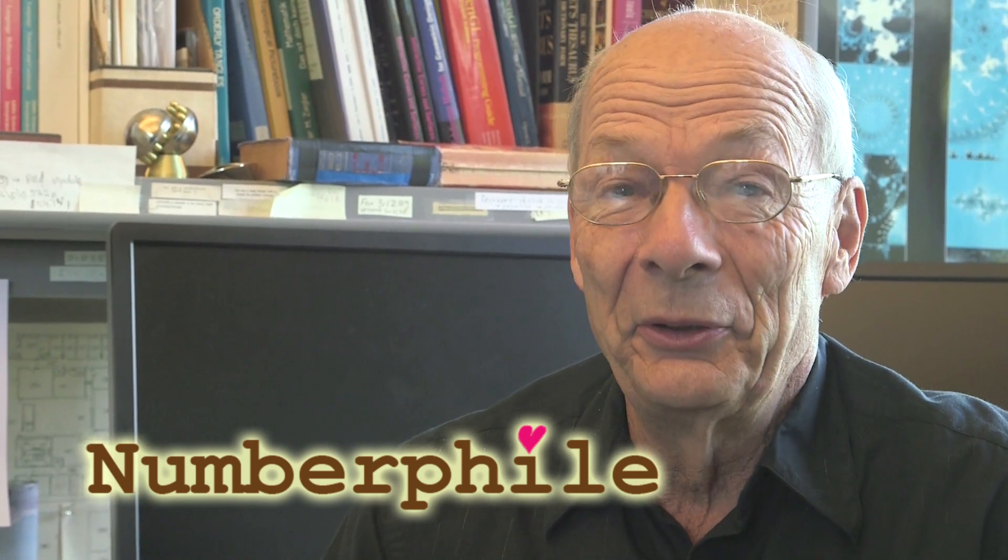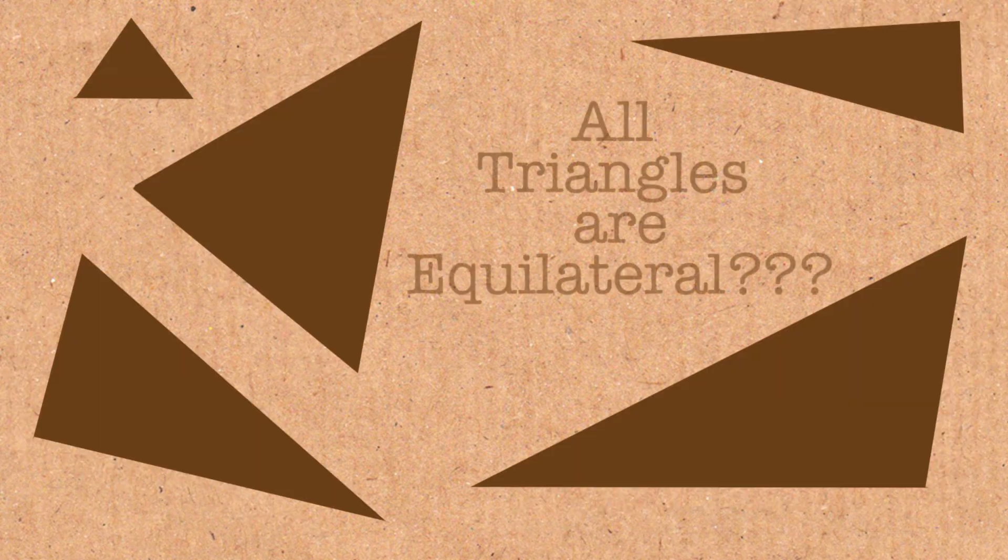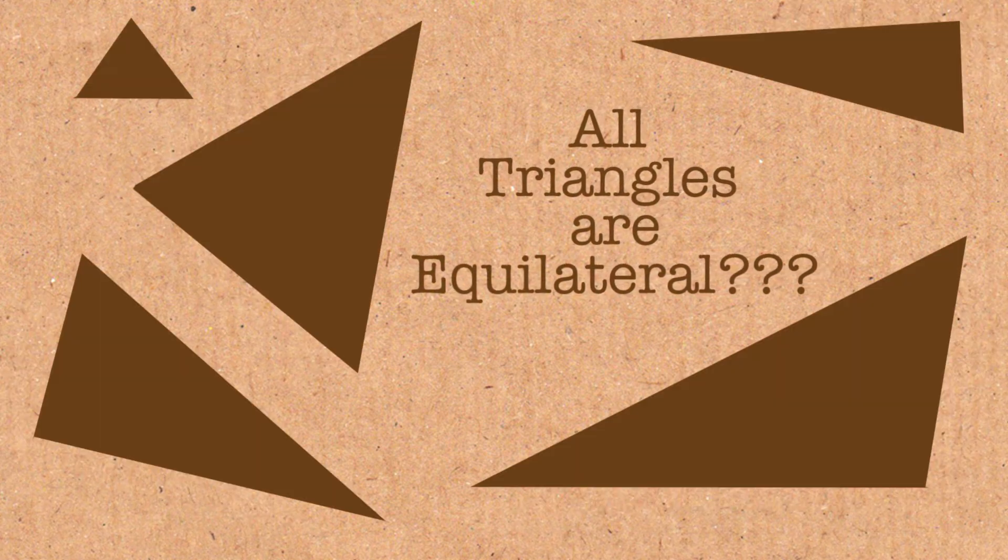I, Carlos Sacan, will prove to you that any triangle that you draw is equilateral. That means it has the same length of the sides all around.